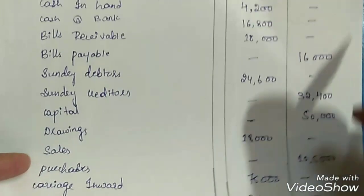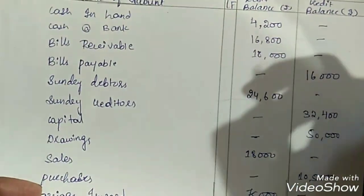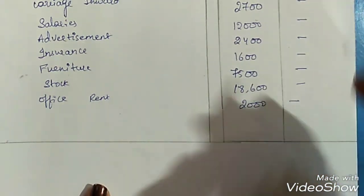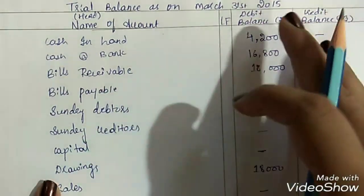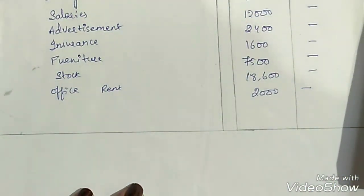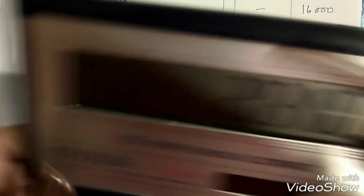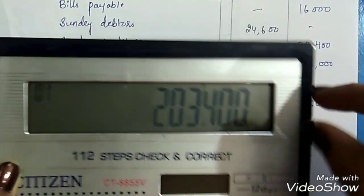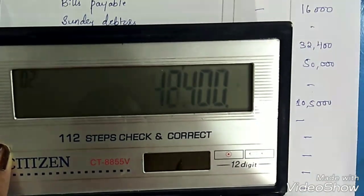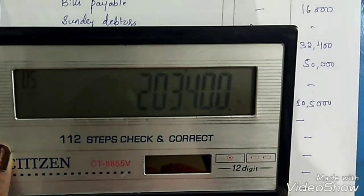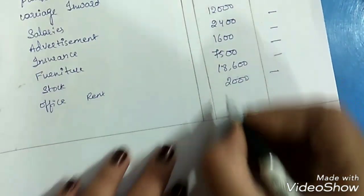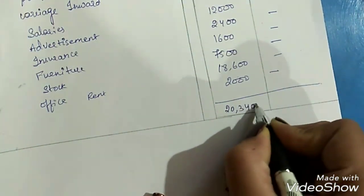Now we need to total both the sides. In a trial balance, when we total up the amount columns, they both should tally — both sides should get the same balance. If they get different balances, it means the trial balance has certain mistakes that need to be corrected. On the debit side, totaling all the amounts gives us Rs. 2,03,400. On the credit side: 16,000 plus 32,400 plus 50,000 plus 1,05,000 also gives Rs. 2,03,400. Both sides tally, which means our trial balance is correct.